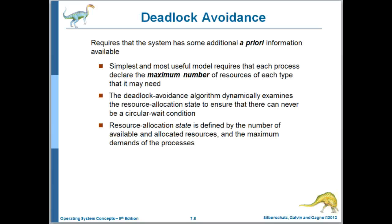Moving on to deadlock avoidance — what we're trying to do is avoid the circular wait condition from holding. As we'll see, each process needs to declare in advance the maximum number of resources that it can acquire. Then we dynamically look at the current allocation of resources and any requests for resources coming in, and determine whether or not a deadlock might result. If it appears that a deadlock might result, we refuse that request at the current time.